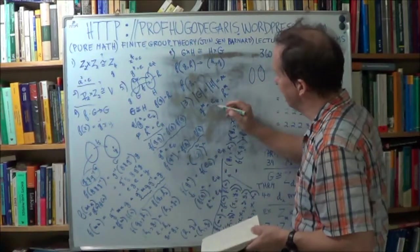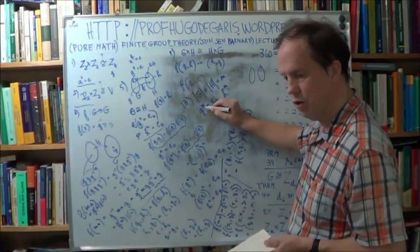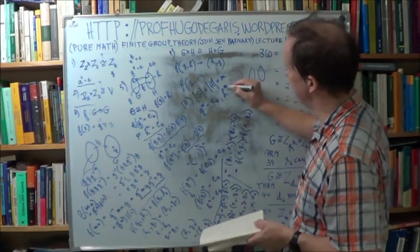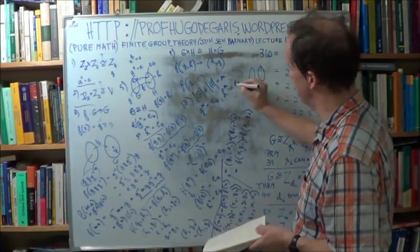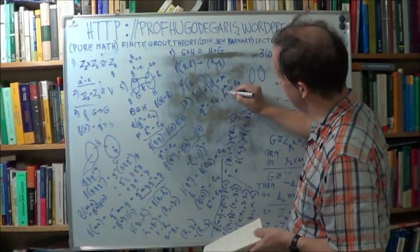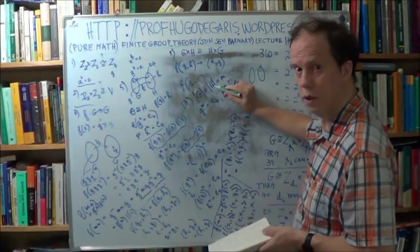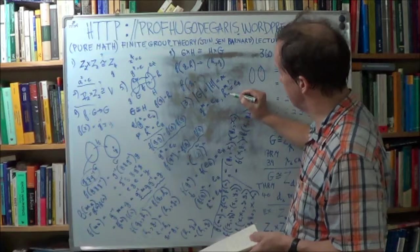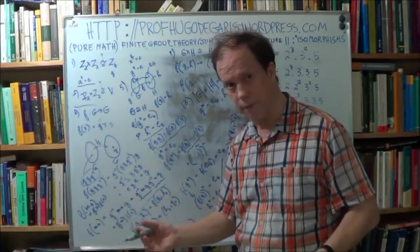By definition, if this is the generator, you raise it to the generator's order, which is m, you get e to the g. Now, if we can show that h to the m gives e to the h, the unit of this group, then what can we conclude? Well, that means that the order of this h is the order of big H, and that means that this h is a generator, and that means big H has a generator, and if it has a generator, by definition, it's cyclic. You follow that logic?